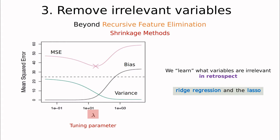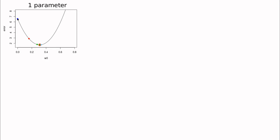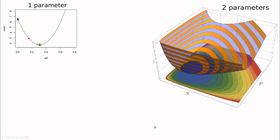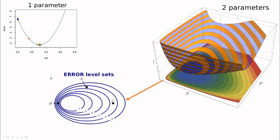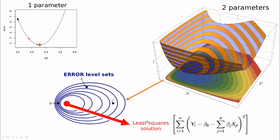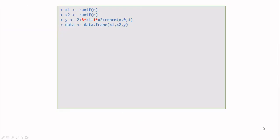I'm going to introduce two popular methods: Ridge regression and the Lasso. Going back to the idea from training and gradient descent — when you have just one parameter, minimizing the error is like finding a minimum on a parabolic curve. With two parameters we have a surface, and with n parameters a hyper-surface. Instead of viewing this as a surface, we can look at error level sets. Ideally, starting from some point in training, we'd like to end up at the least squares solution, which minimizes the difference between the prediction and the linear combination of predictors.